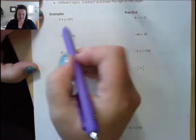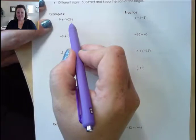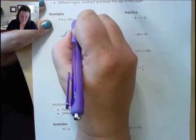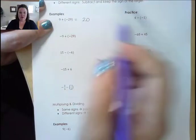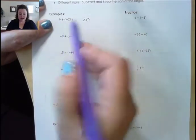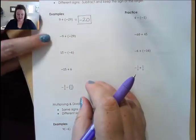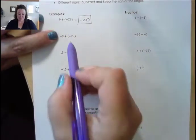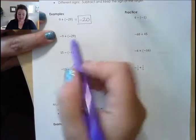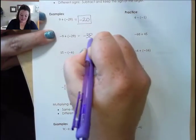Here, if I have 9 and negative 29, notice the 9 is positive and the 29 is negative. Signs are different, so I subtract, which gives me 20. And notice the bigger number here is 29, so it's going to stay negative. Same idea on the next one: negative 9 and negative 29 — both are negative, so we're going to combine them and keep it negative. This gives me negative 38.